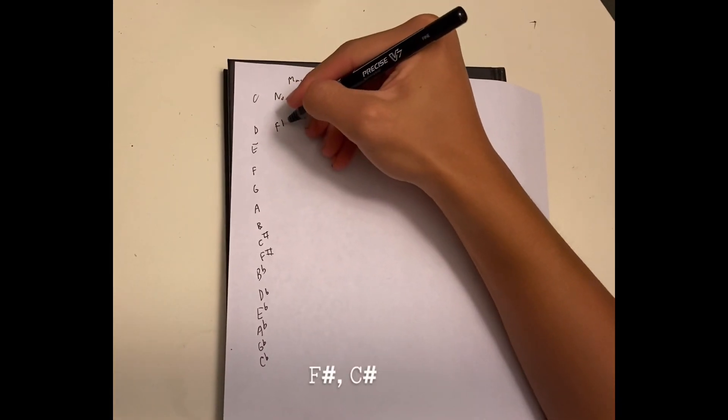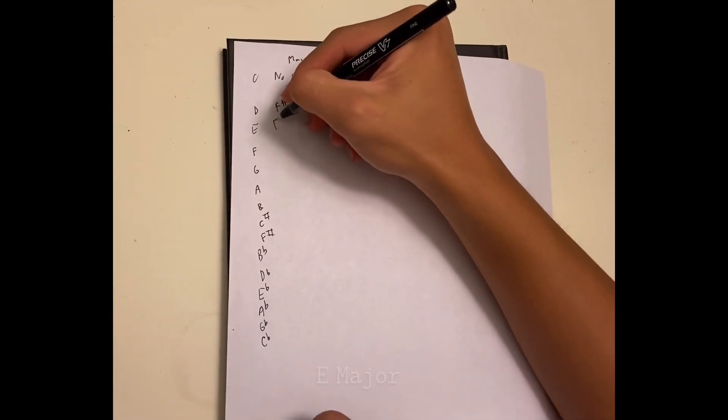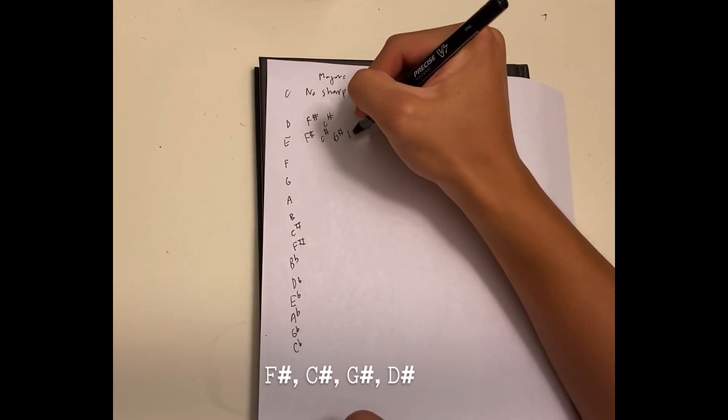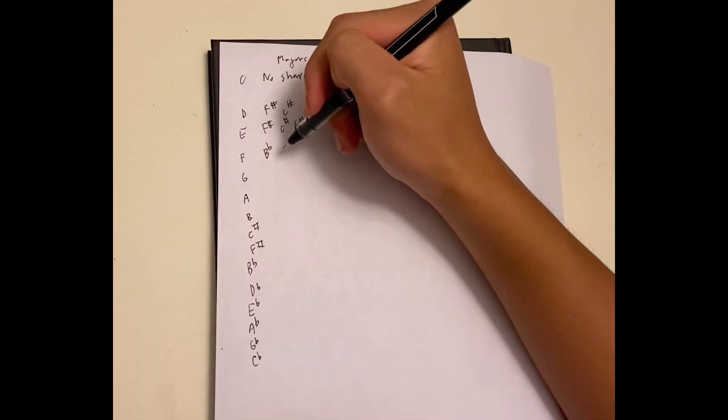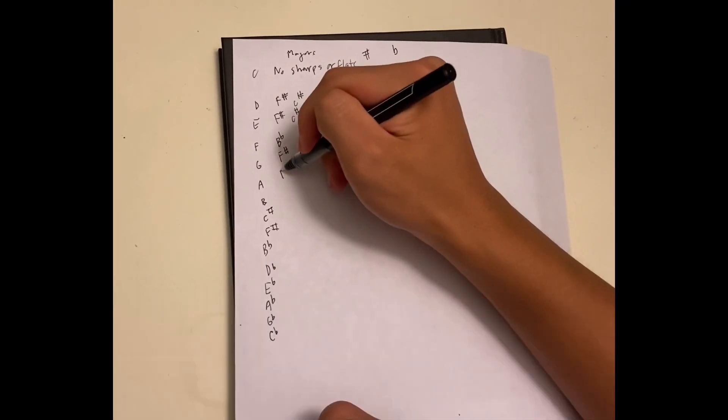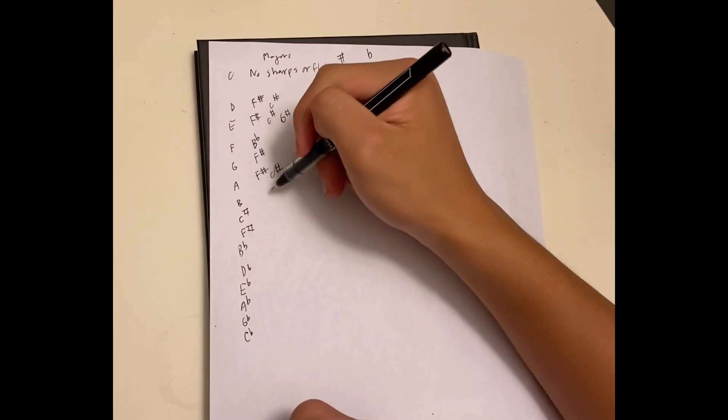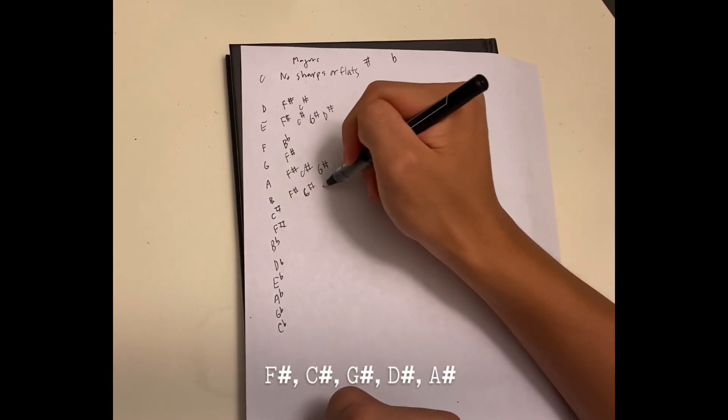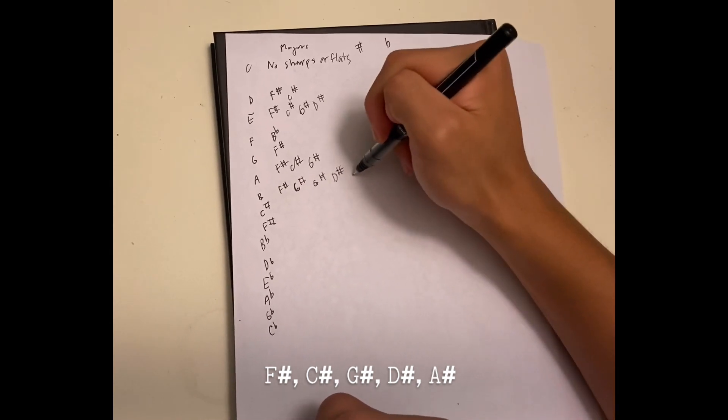Okay, C major, no sharps or flats. E major, there are two sharps: F sharp and C sharp. E major, there are four sharps: F sharp, C sharp, G sharp, D sharp. F major: B flat. G major: one sharp and it's F sharp. A major: F sharp, C sharp, G sharp. B major: F sharp, C sharp, G sharp, D sharp, and A sharp.